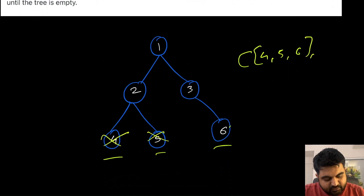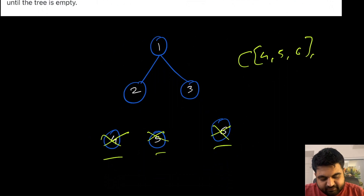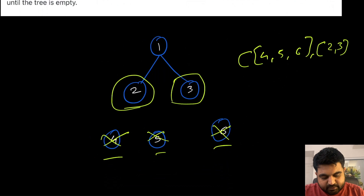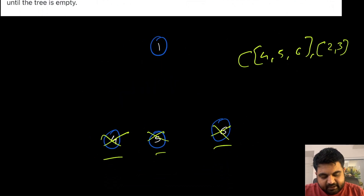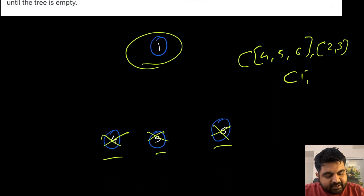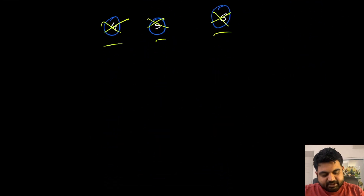After removing those leaf nodes, we are left with another set of leaf nodes: nodes two and three, which form the second collection. Once we remove them, we are only left with the root node with value one. That is all what we need to return — this is the whole problem.